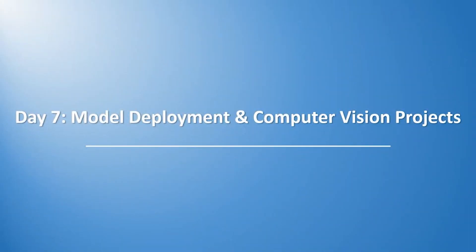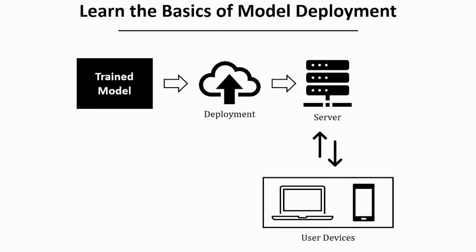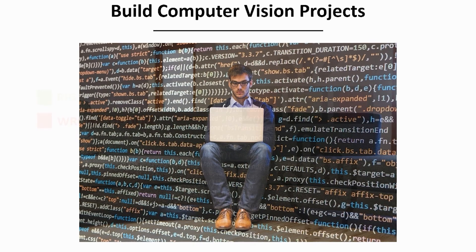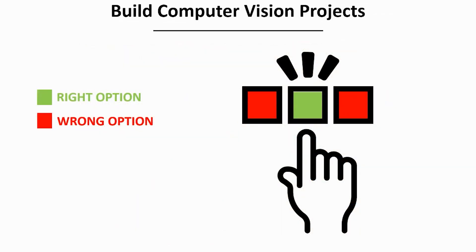Day seven covers model deployment and computer vision projects. After you've trained a deep learning model, the journey doesn't stop there — you need to deploy it to production, and there are a lot of options out there. I'll talk about the options and resources that will help you get started in this area. To master any skill, you need to build something, and this is where all your knowledge is tested. I'll show you how to get started building computer vision projects, the best practices, and what things to avoid.